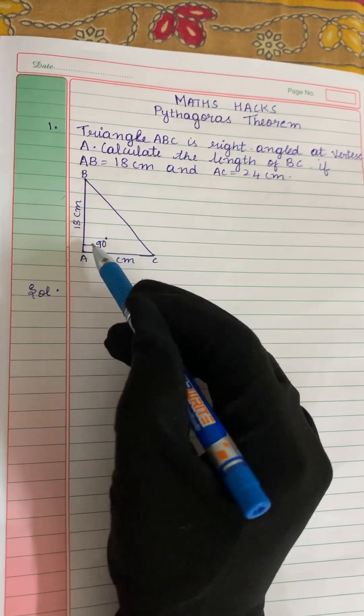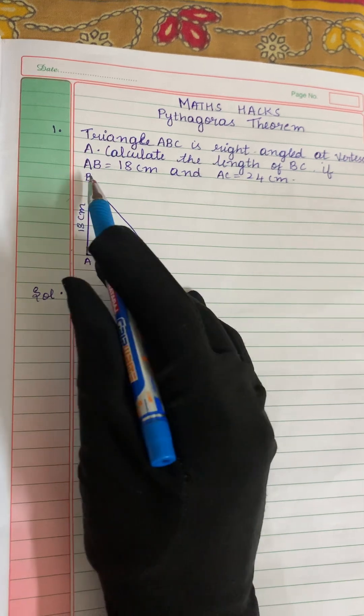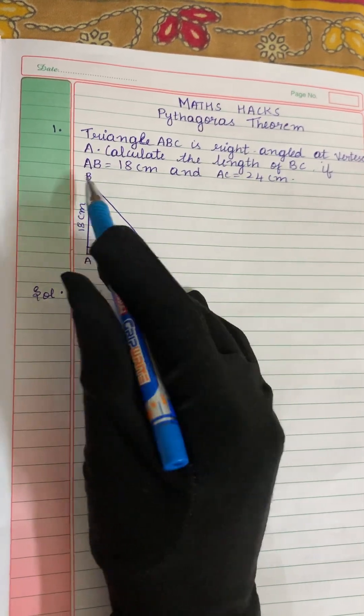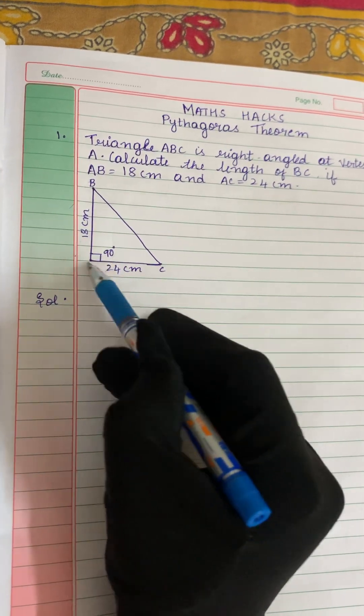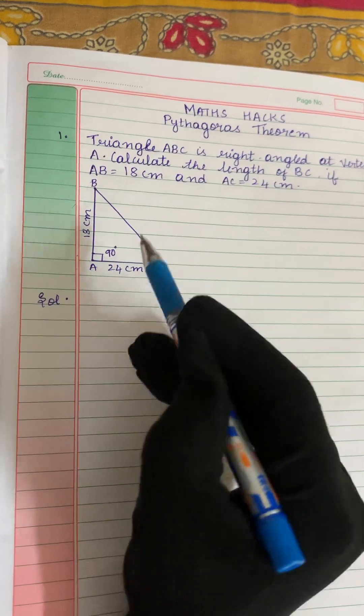So according to the question, they have given us AB, the value of AB and AC. This is a right angled triangle. Here this is called the vertex. Angle A is vertex.